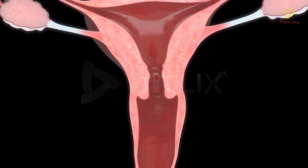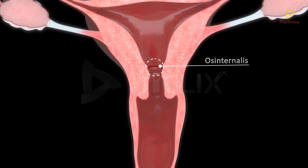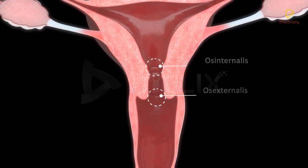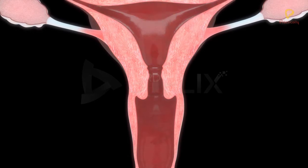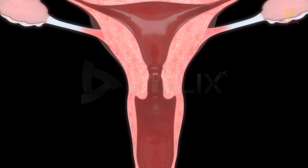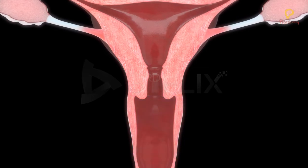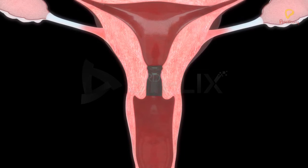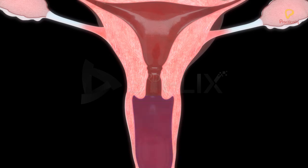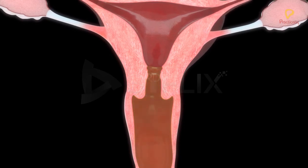The cervix has two openings: os internalis and os externalis. Os internalis is towards the corpus of the uterus and the os externalis is towards the vagina. The cavity of the cervix is called the cervical canal. The cervical canal, along with the vagina, forms the birth canal.